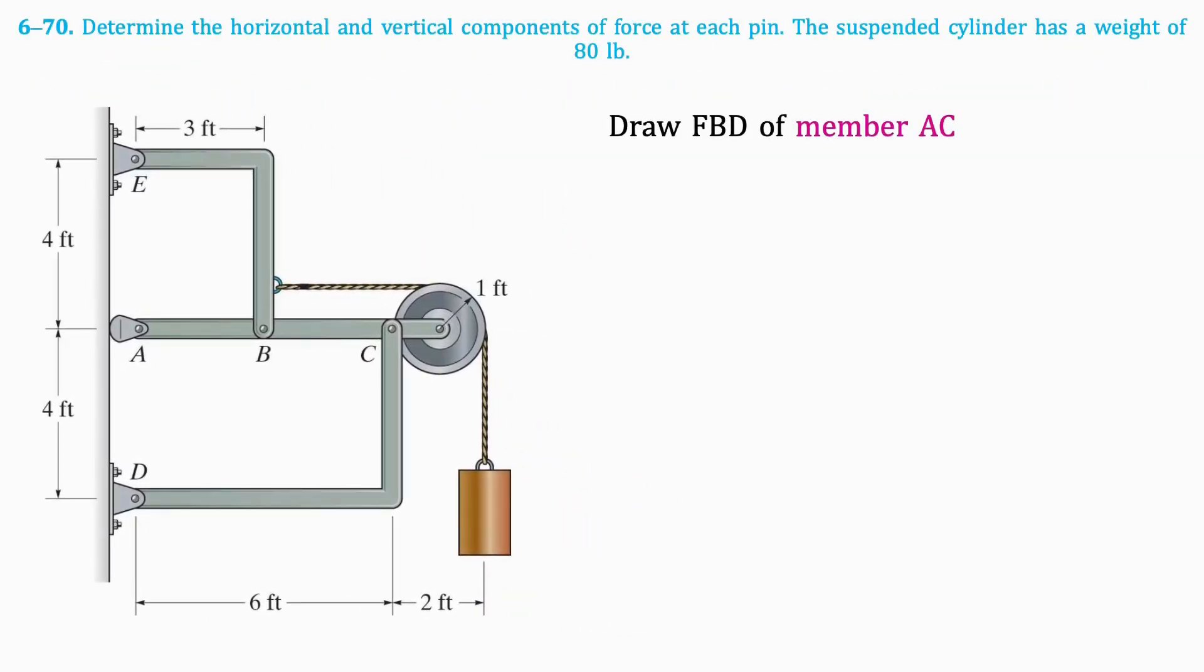First we'll draw the free body diagram of member AC. The weight of the cylinder is 80 pounds, so the reactions along the cables are also 80 pounds.